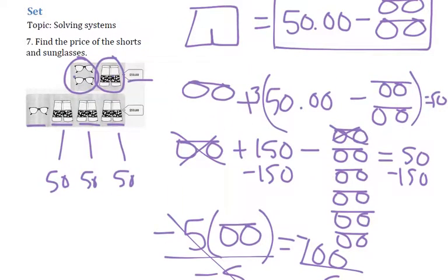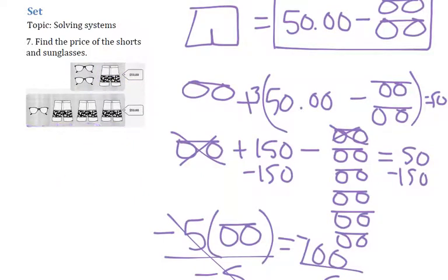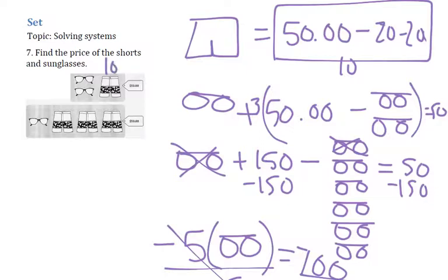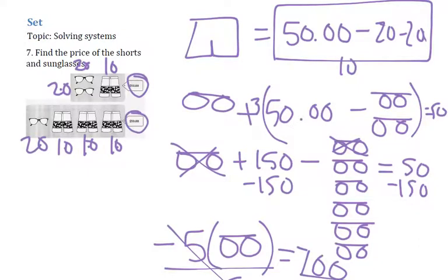Divide by negative 5 to find out what each pair of glasses costs. Negative 100 divided by negative 5 is positive $20. So how much would the shorts be? If each pair of glasses is $20, then 50 minus 20 minus 20 would be $10. So $10 for shorts and $20 for glasses. Does that work? 20 plus 20 plus 10 is 50. 20 plus 10 plus 10 plus 10 is also 50. That's how I figured it out - you may have done it differently.